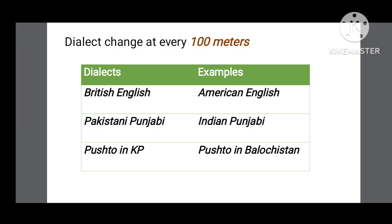Punjabi India mein bhi bholi jati hai aur Pakistan mein bhi bholi jati hai, lakin agar in duno speakers ki interaction ho jaye toh wou ek dhusri ko easily understand kar sakte hai. The third example is Pashto spoken in KPK and Pashto spoken in Balochistan.